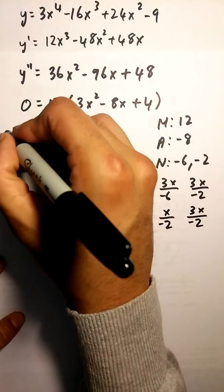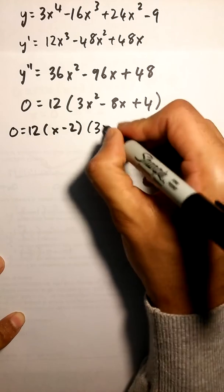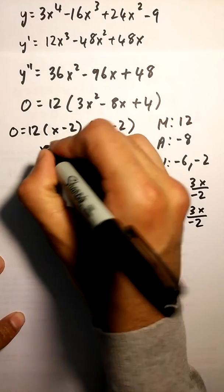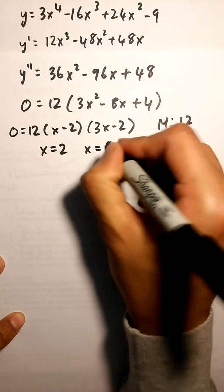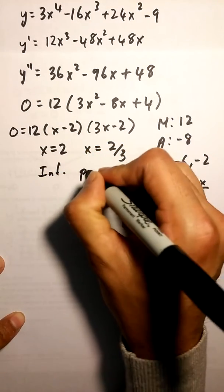My solutions are x minus 2, 3x minus 2, which gives me x equals 2 and x equals 2 over 3. Those are my inflection points.